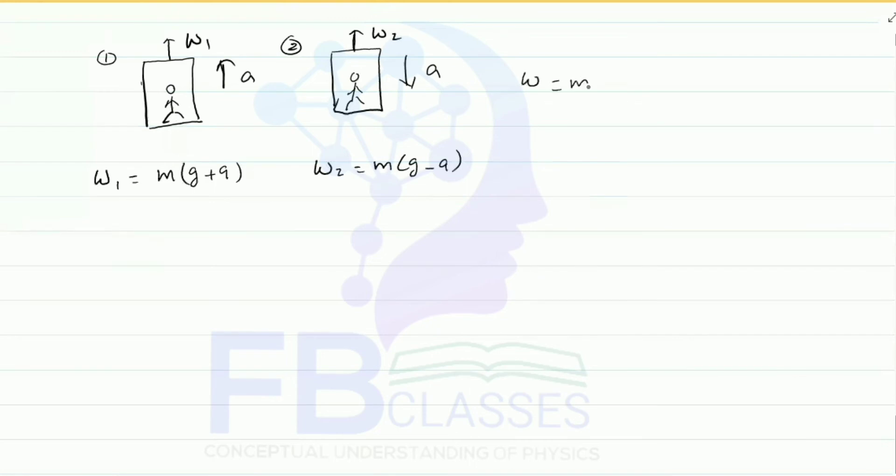The actual weight of the man is W equals mg. This is equation one and that is equation two.